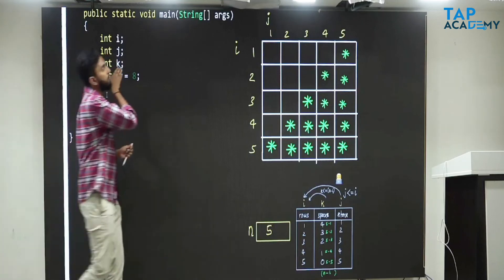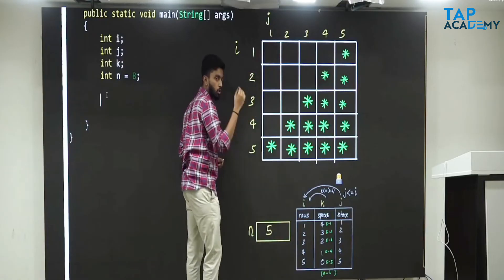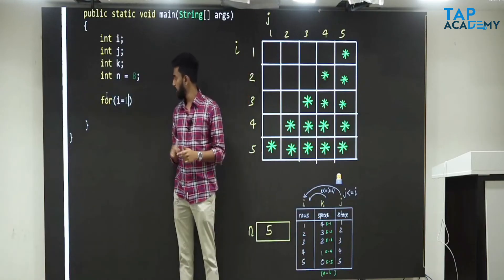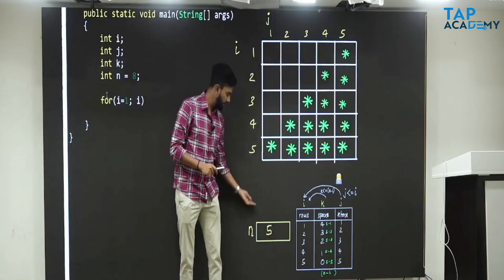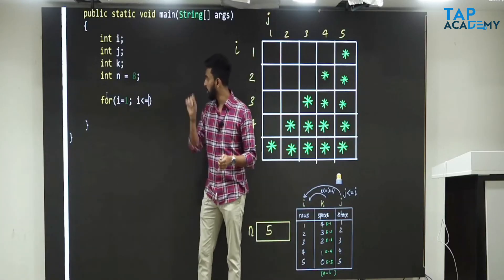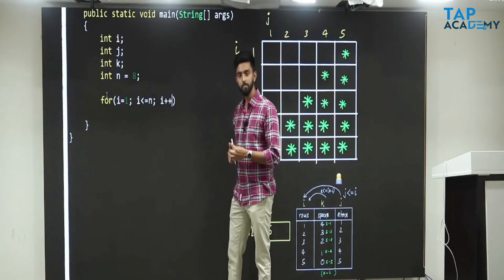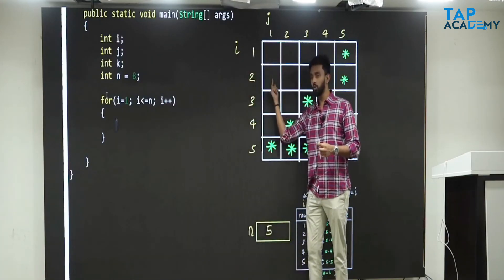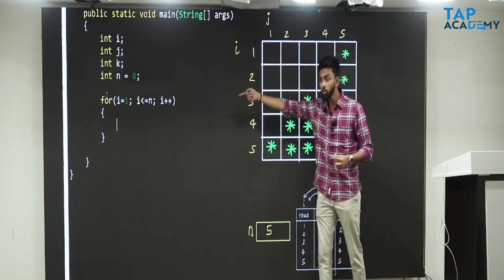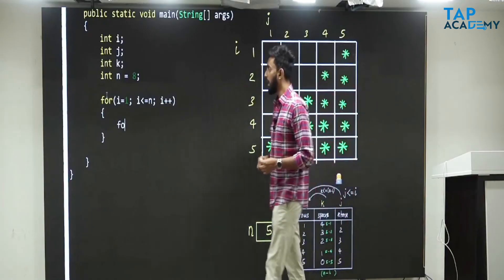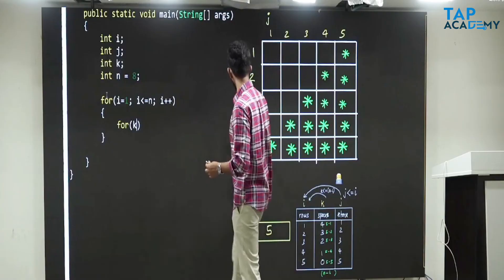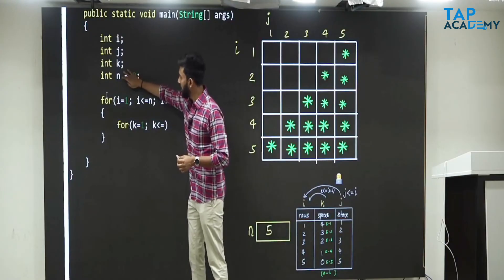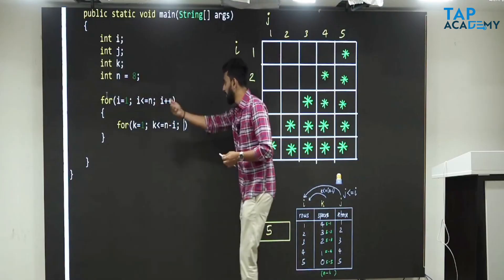First, when you enter a row, what you see is rows, so code for rows. Row means I. I equal to 1, I less than or equal to N, I plus plus. Come inside. When you come inside a row, first — is it space or stars? Space. So write the loop for spaces. K equal to 1, K less than or equal to N minus I, K plus plus. Inside that, system dot out dot print — print space, because spaces go one next to the other.